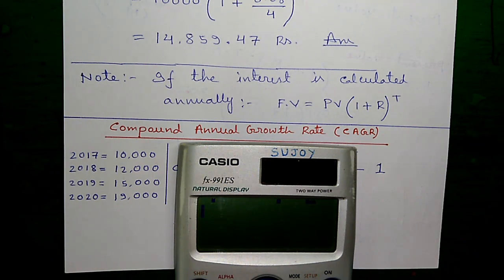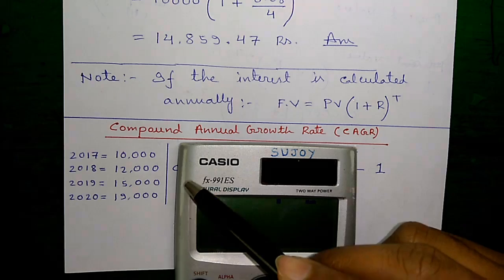Hello, I am Sujoy and today I will tell you about Compound Annual Growth Rate or CAGR and the Rule of 72. What is CAGR? Let's understand.